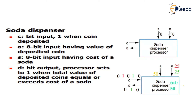The coin has been accepted. A is nothing but what is the value of the deposited coin — that will be given through the value of A. S is the eight-bit input which holds the cost of the soda. So I am giving a signal indicating whether the coin has been inserted or not, the value of the coin, and the value of the soda — everything is set as input to the processor.